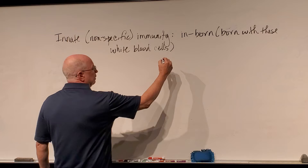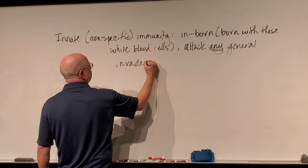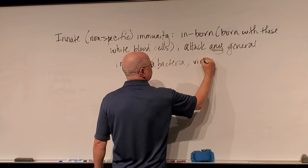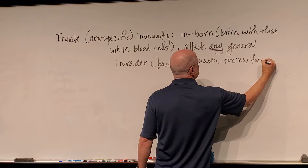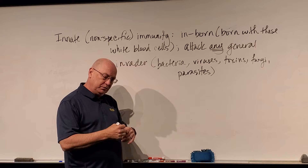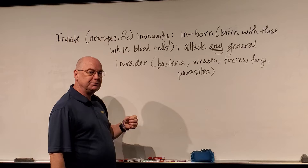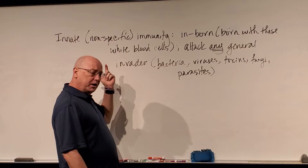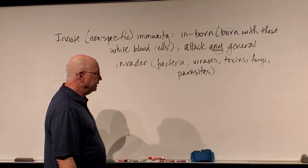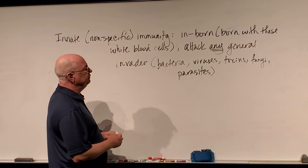One thing to know about these white blood cells is that they will attack any general invader — bacteria, viruses, toxins, fungi, parasites. It doesn't matter. Anything that tries to invade your body, if these cells recognize a foreign invader — we call these foreign cells because they're not natural to our body — they will phagocytose or remove it one way or another. They don't care what it is. They don't need to know who it is. They just know it doesn't belong.